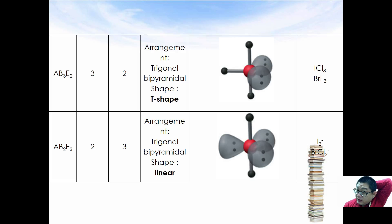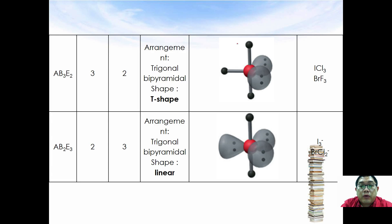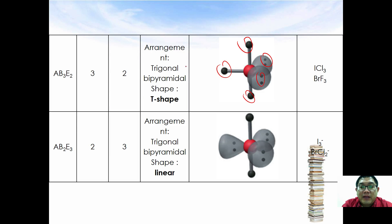If we replace another bond pair with a lone pair electron, so you have three bond pairs and two lone pairs, the arrangement is similar to trigonal bipyramidal but the shape is T-shaped. Examples are ICl3 and BrF3.